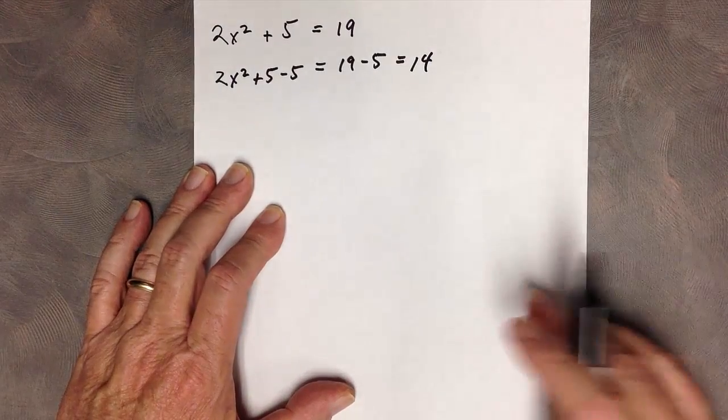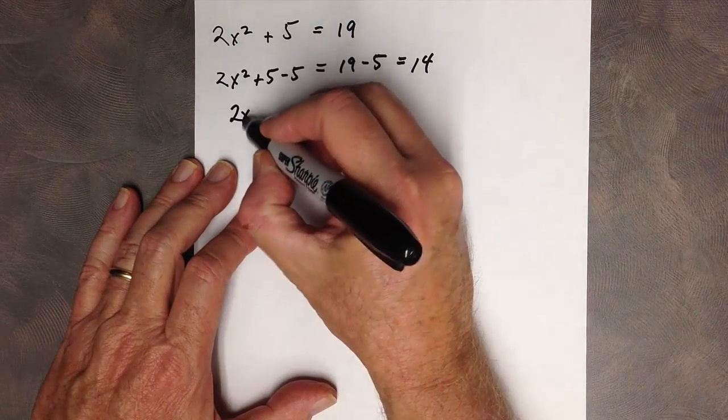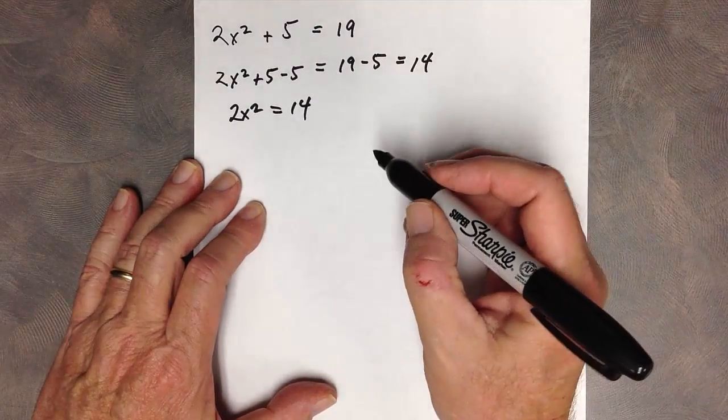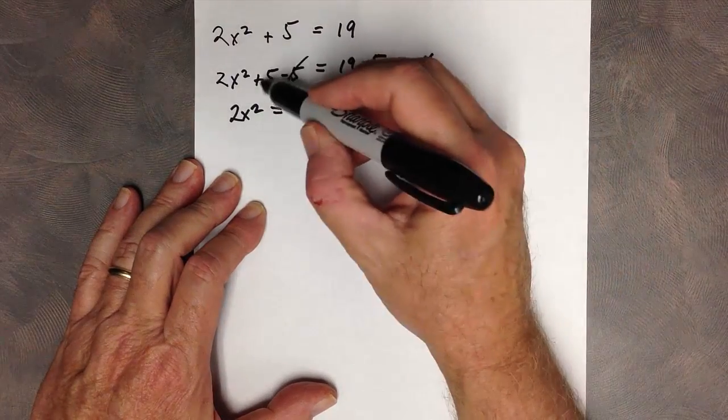Right? We'll hope. So, 2x² = 14 when we knock out the 5s here.